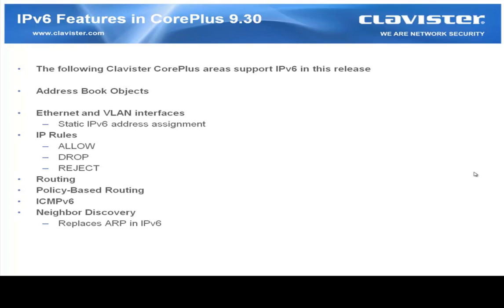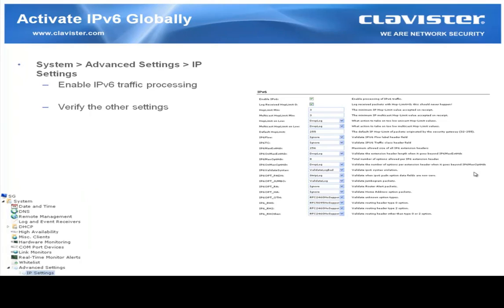IPv6 features in Core Plus 9.30. We have support for IPv6 in the address book objects, Ethernet and VLAN interfaces where we can do static IPv6 address assignment. We support the following IP rule actions: allow, drop, and reject. We also support routing over IPv6, policy based routing, ICMPv6, and neighbor discovery which will replace ARP in IPv6. In order to use IPv6 in Core Plus you must activate it globally, which is done in System, Advanced Settings, IP Settings.